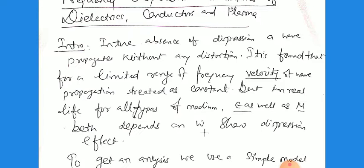In the absence of dispersion, a wave propagates without any distortion because there is no dispersion — the wave moves in a straight line with no deviation from its path. It is found that for a limited range of frequency, the velocity of wave propagation can be treated as constant. But in real life, for any type of medium, ε as well as μ both depend on ω, so the medium shows dispersion. Because the frequency depends on ε and μ, and both are functions of ω, for different frequencies there is a different dielectric constant and different permeability, so the property of the medium changes — this shows the dispersion effect.